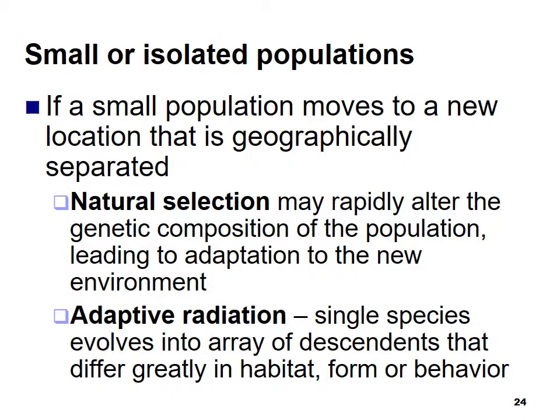Smaller isolated populations are often more likely to form new species. If a small population moves to a new geographically separated location, natural selection could rapidly alter the genetic composition of that population, leading to adaptation to the new environment. You can also have adaptive radiation, where a single species evolves into an array of descendants that differ greatly in their habitat, form, or behavior.